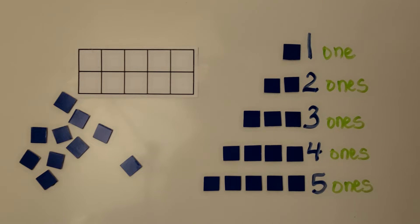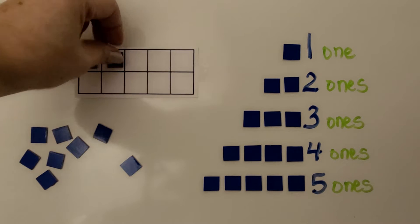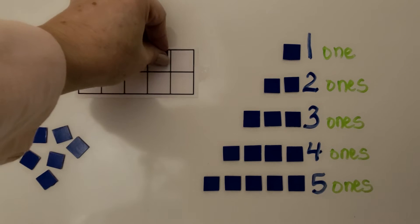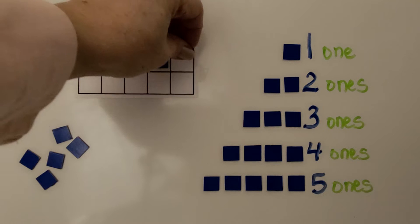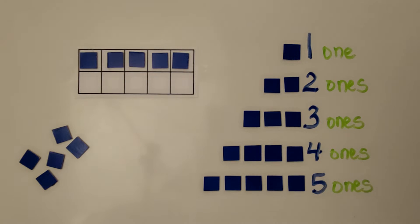We've learned how to use a ten frame to model numbers. We put one counter in each space. When the top row is full—one, two, three, four, five—we know we have five. When all of the ten frame is full, it shows 10 ones.